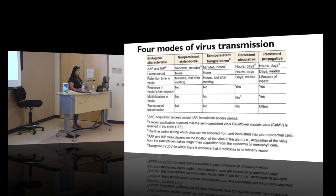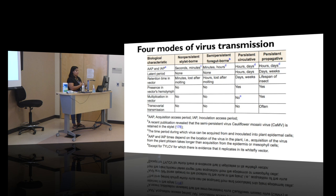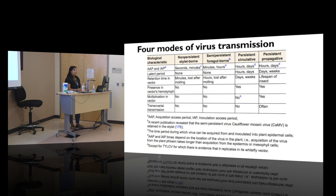The next two types are more complex. Persistent circulative — the INSV type — can take hours or days to acquire, followed by a latent period before the insect becomes viruliferous and able to transmit the virus. The virus can remain in the insect vector for days, sometimes weeks, sometimes the insect's entire lifespan. The persistent propagative type — such as tomato spotted wilt virus — can actually multiply in the vector. With INSV, an infected mother thrips does not pass the virus to offspring, but with tomato spotted wilt virus, the mother thrips can pass the virus transovarially.